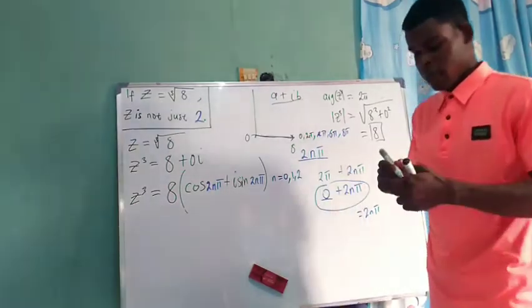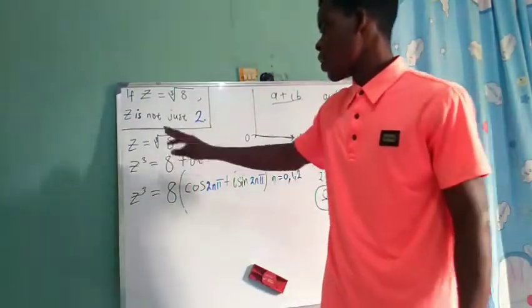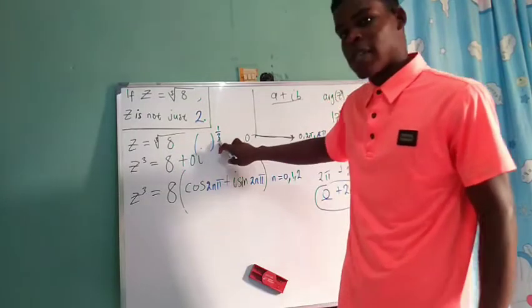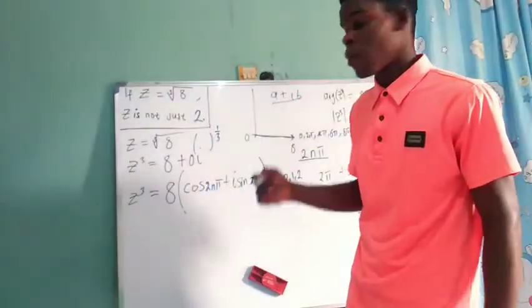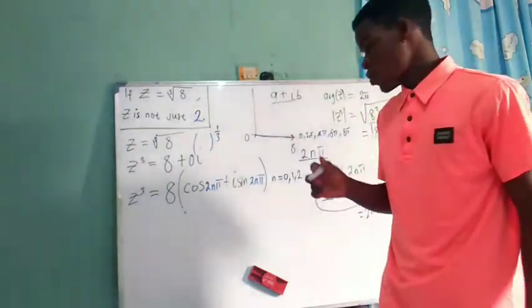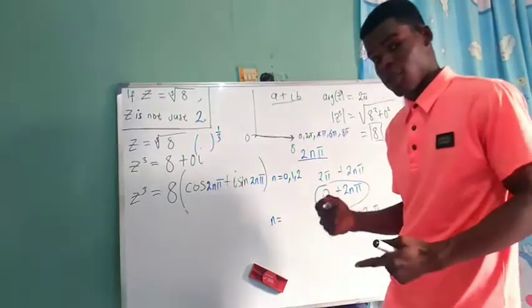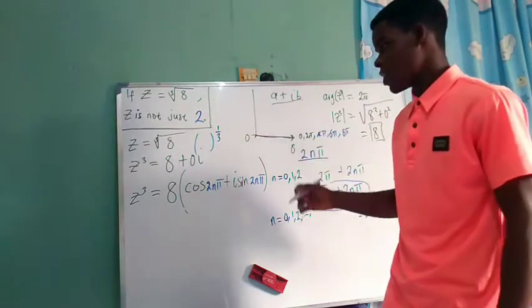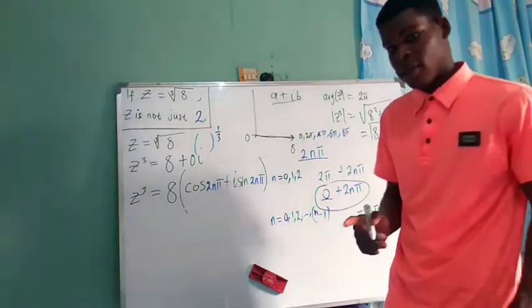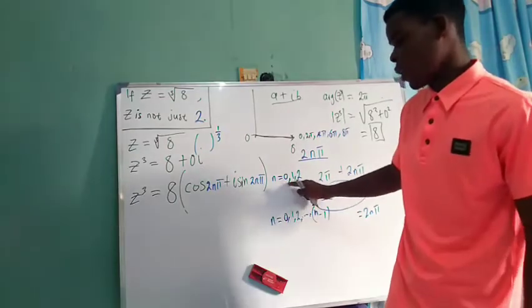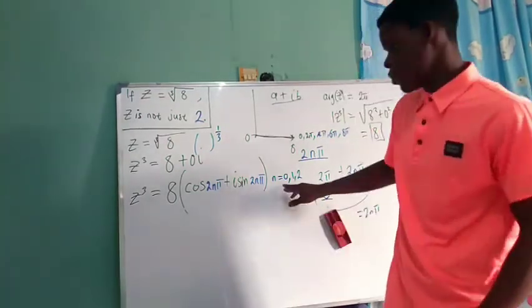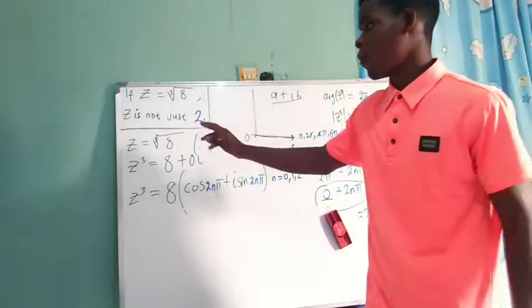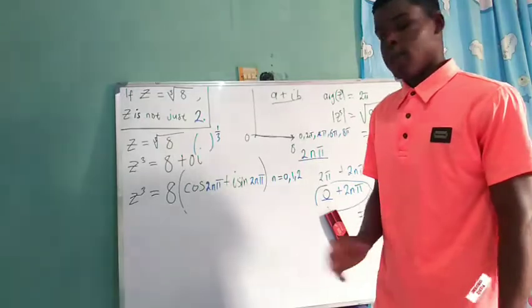Now n is not going to exceed 2, because we are taking the cube root — that is, to the power of one-third. You respect the denominator of the power, which is 3. So n goes from 0 up to n minus 1, which for a cube root means n equals 0, 1, and 2. Plugging each in will give us three different values for the cube root of 8.